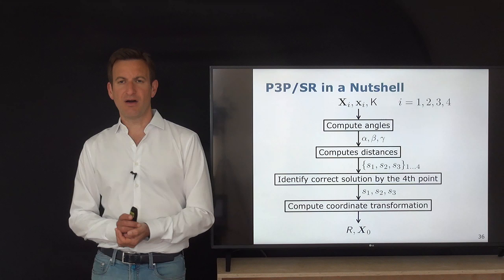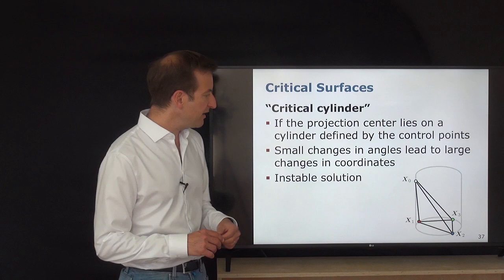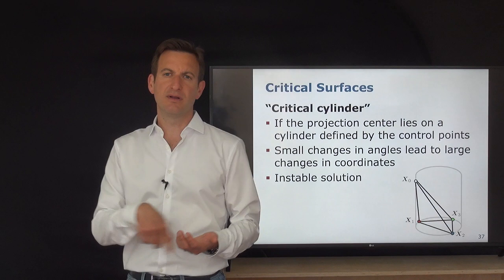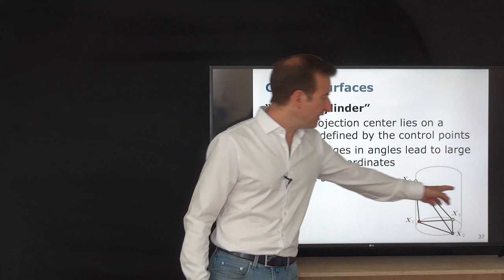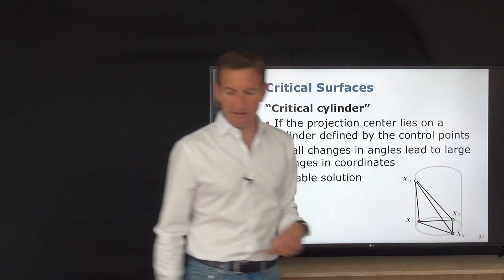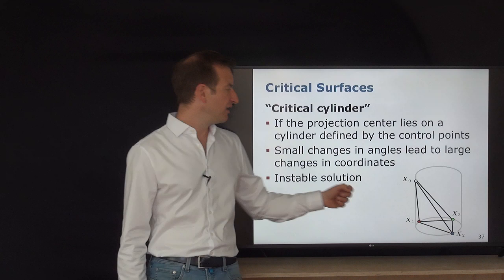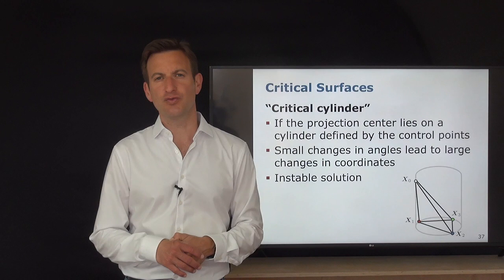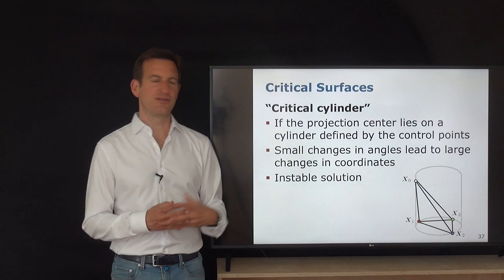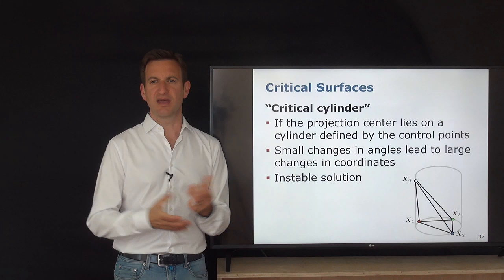An important caveat: there exist numerically unstable configurations called the critical cylinder. If the three control points lie on the base circle of a cylinder and the projection center lies on the cylinder's surface (the tubus), small changes in angles produce large coordinate changes, yielding an unstable solution. Practitioners must be aware of these degenerate configurations.